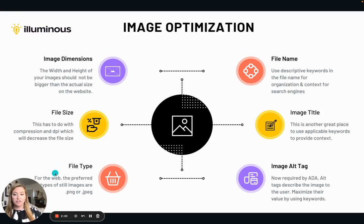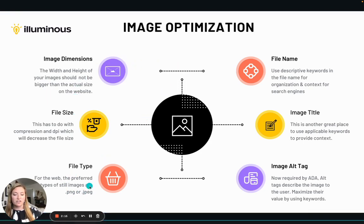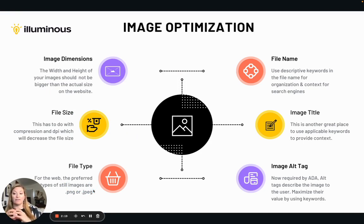You also want to make sure that you're using the right file type. You don't want to be uploading a .AI file or a .PSD file — you want to use a .PNG or JPEG. These elements are really for the file itself; you do all of these things before you even upload it into your website.